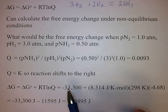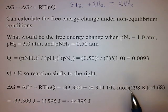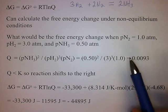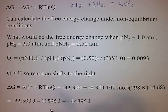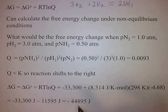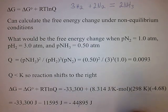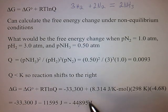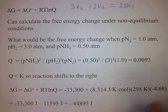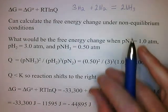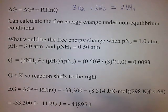To calculate the free energy change under these conditions: negative 33,300 (the standard free energy change) plus 8.314 times 298 times ln(0.0093). Working this out, it comes to −44,895 joules. So the reaction is actually more favorable under these conditions because delta G is more negative. Basically, a reaction shifting to the right makes delta G more negative.